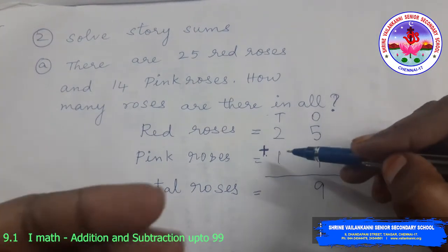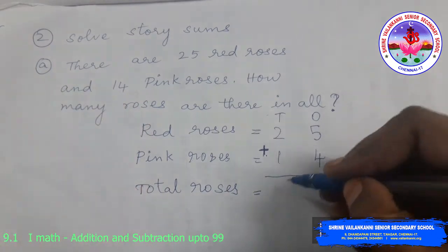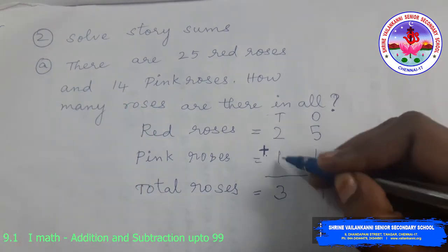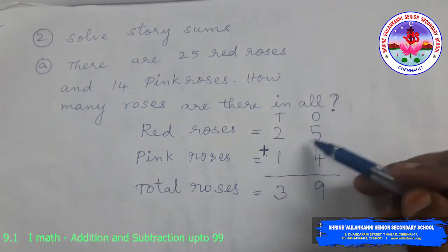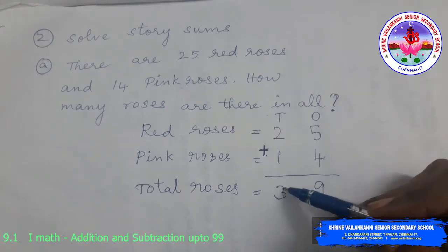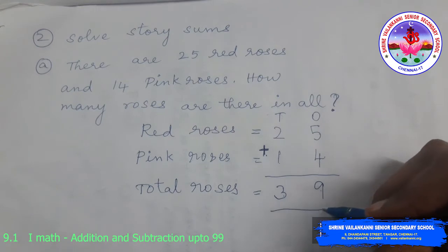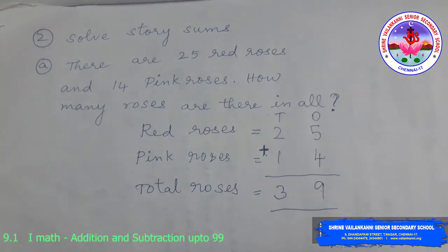Now, 10s part. 2 plus 1. 2 plus 1 is 3. So 3 10s. 2 10s plus 1 10 is 3 10s. So 25 plus 14 is 39. 3 10s and 9 1s. That is 39 roses. So total roses, 39.